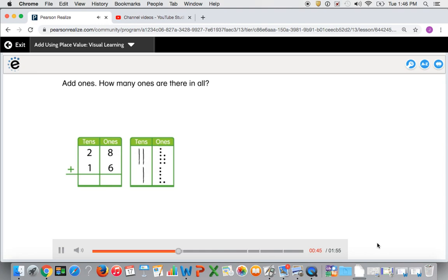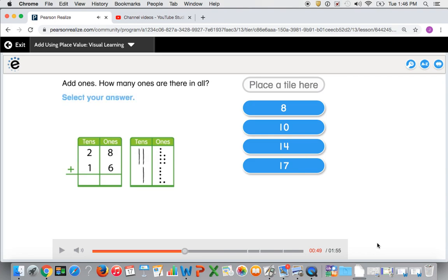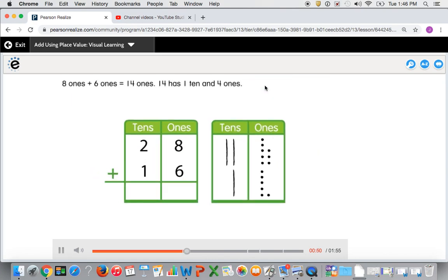Add 1s. How many 1s are there in all? Select your answer. 8 1s plus 6 1s equals 14 1s. 14 has 1 10 and 4 1s. You can make a 10 with the 14 1s.